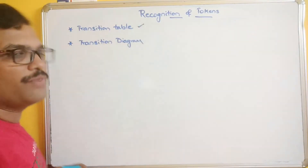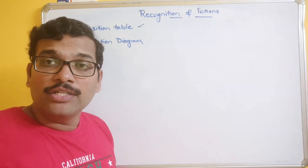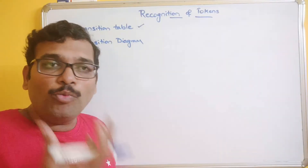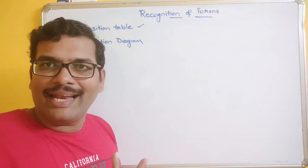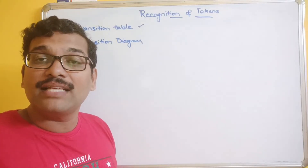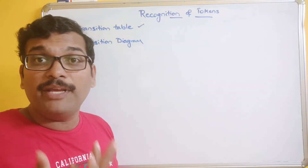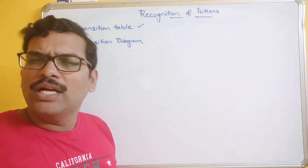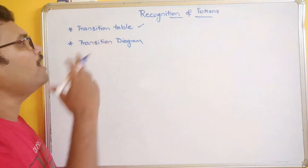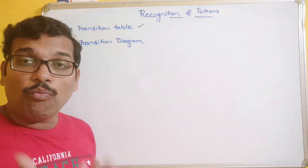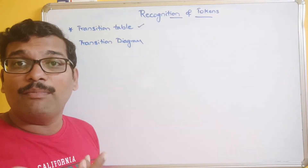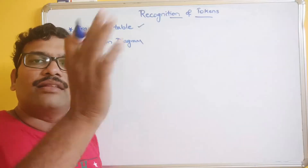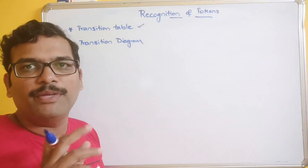Coming to the transition table first — in our previous sessions, we saw that the output of the lexical analyzer, which is the first phase, is a list of tokens arranged in a symbol table. This same symbol table we can call a transition table. It contains the lexeme and the corresponding token.